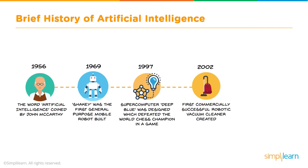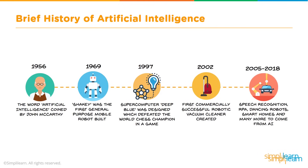Nowadays you can go down to Target and buy one, but back in 2002 that was the first model put out. And finally, from 2005 to 2018, in the last more than a decade, we have speech recognition, RPA, dancing robots, smart homes, and many more to come. What I want you to notice about this brief history of Artificial Intelligence is the compression of time.